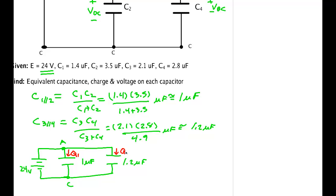We now know that Q1 equals 1 microfarad times 24 volts by capacitance definition, so that's 24 microcoulombs. That means there's 24 microcoulombs going into both C2 and C1.